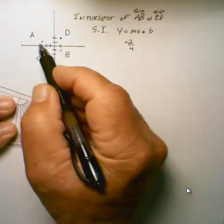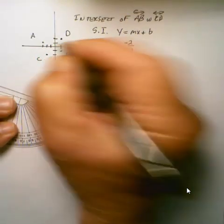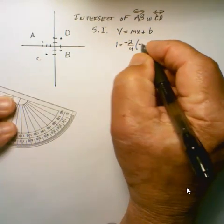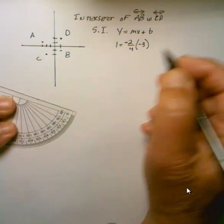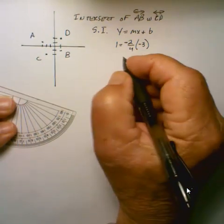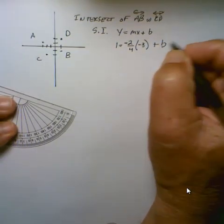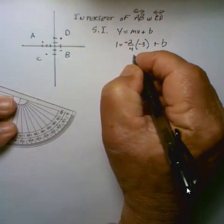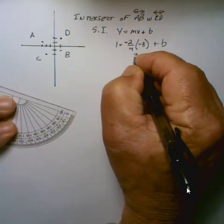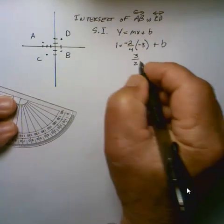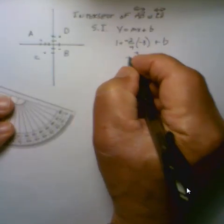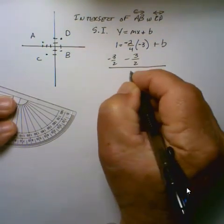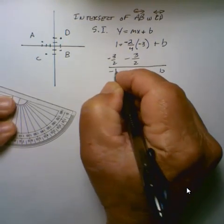We see that A itself has Y of 1 and X is negative 3. When we work this out, we see that B, this is 6 fourths which reduces to 3 halves. When we subtract 3 halves from both sides, we see that B equals negative 1 half.